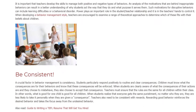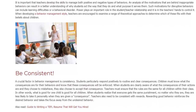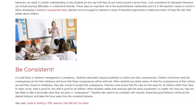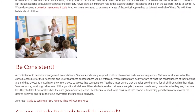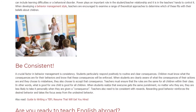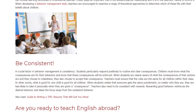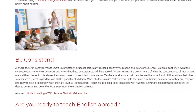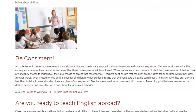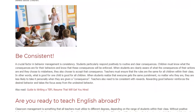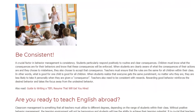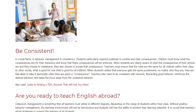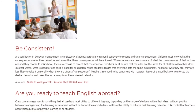When students are clearly aware of what the consequences of their actions are and they choose to misbehave, they also choose to accept that consequence. Teachers must ensure that the rules are the same for all children within their class. What is good for one child is good for all children. When students realize that everyone gets the same punishment, no matter who they are, they are less likely to take it personally when they are given a consequence.